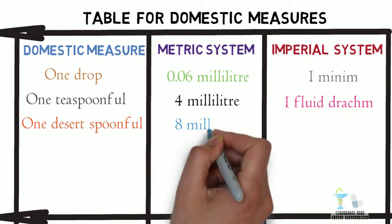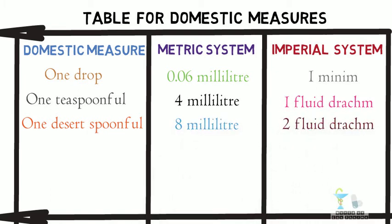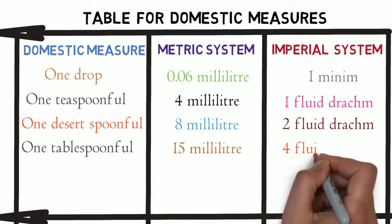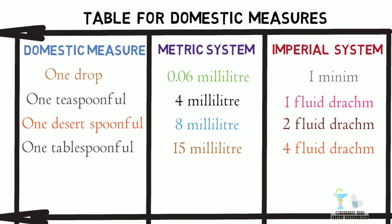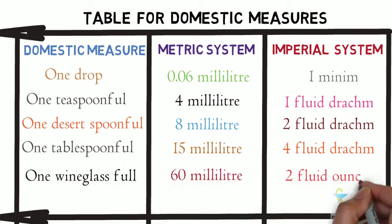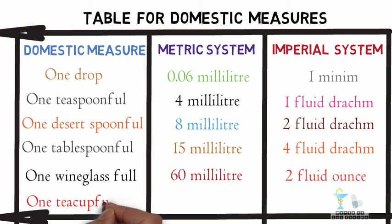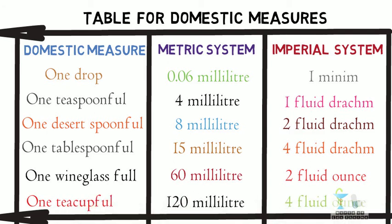One dessertspoonful is 8 milliliters, equal to two fluid drams. One tablespoonful is 15 milliliters, equal to four fluid drams. Two tablespoonfuls is 30 milliliters, equal to one fluid ounce. One wine glass full is 60 milliliters, equal to two fluid ounces. One teacup full is 120 milliliters, equal to four fluid ounces. One tumbler full is 240 milliliters, equal to eight fluid ounces.